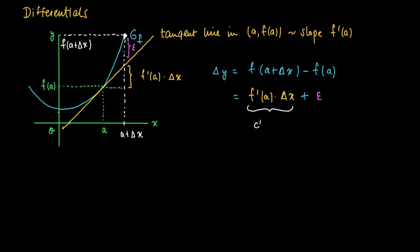In yellow we see the change along the tangent line, and in purple, that's the gap between Δy—the actual change—and the estimated change if it would have followed the tangent line. That is the difference between the actual change and the linear estimate.